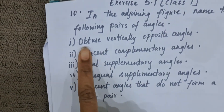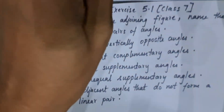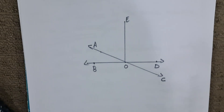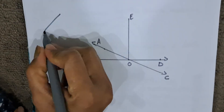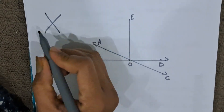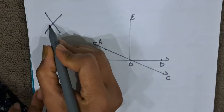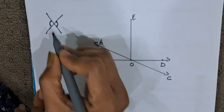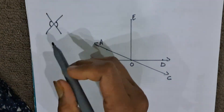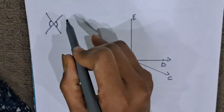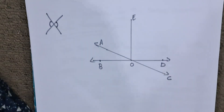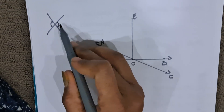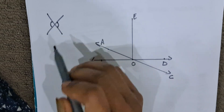The first one is obtuse vertically opposite angles. Vertically opposite angles means when two lines intersect, a cross is formed. The opposite angles at the vertex are called vertically opposite angles, and they are always equal.